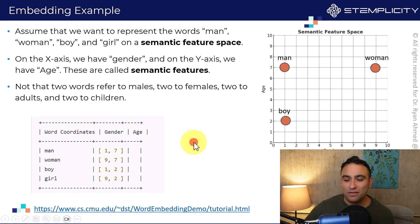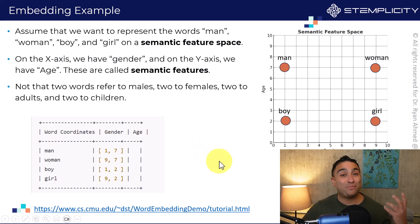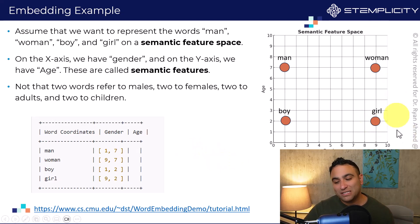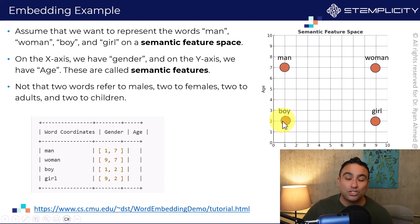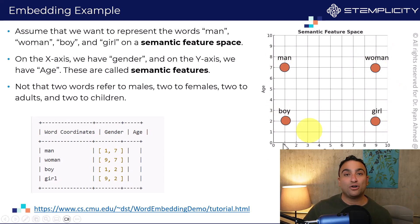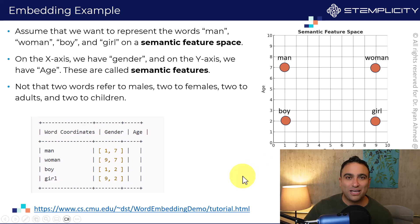Now let's represent 'girl'. A girl is going to be somewhere here — she's going to have the same gender axis value as a woman, but differ on age. Why? Because a girl is usually younger than a woman. That's pretty straightforward.